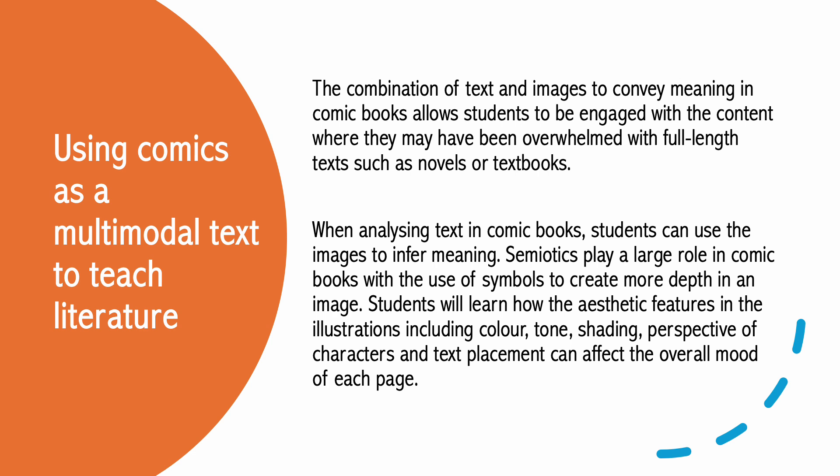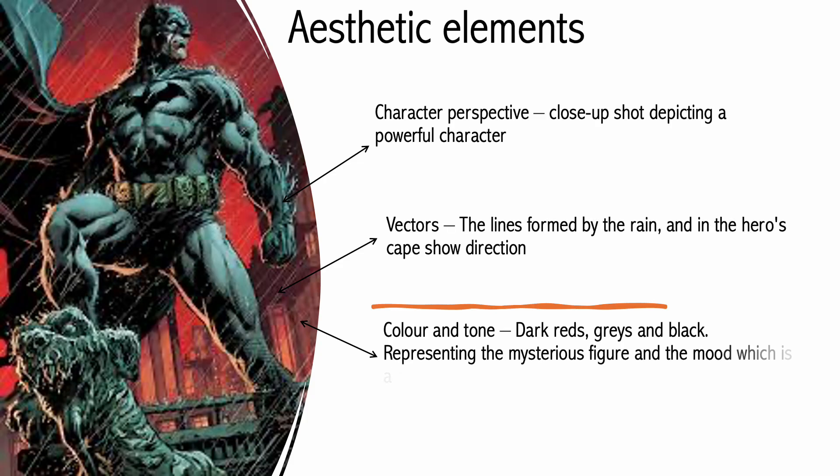Combining text and images to convey meaning in comic books allows students to be engaged with the content where they may have been overwhelmed with full-length text such as novels or textbooks. Comics are a versatile tool for teaching literacy skills at any stage of learning. Due to the nature of the illustrative style that intentionally adds more to the story, children with minimal reading ability can still comprehend meaning by using the images as a guide. Comics' visual aspect and sequential storytelling encourage children with limited reading abilities to engage with the teacher and comprehend the events occurring in each panel. When analysing text in comic books, students can use the images to infer meaning. Semiotics play a large role in comic books, using symbols to create more depth in an image. Students will learn how the aesthetic features of comic books — such as colour, tone, shading, and perspective of characters and text placement — can affect the overall mood on each page.